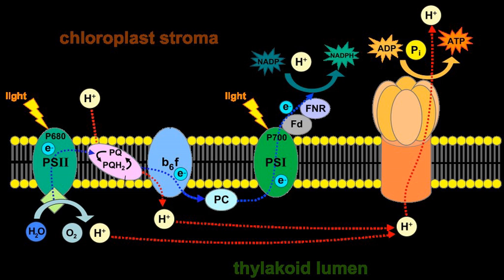PSI accepts electrons from plastocyanin and transfers them either to NADPH or back to cytochrome B6F. PSI, like PS2, is a complex, highly organized transmembrane structure that contains antenna chlorophylls, a reaction center P700, phylloquinone, and a number of iron-sulfur proteins that serve as intermediate redox carriers. The light harvesting system of PSI uses multiple copies of the same transmembrane proteins used by PS2. The energy of absorbed light is funneled into the reaction center, where it excites special chlorophyll molecules P700 — maximum light absorption at 700 nm — to a higher energy level. The process occurs with astonishingly high efficiency.